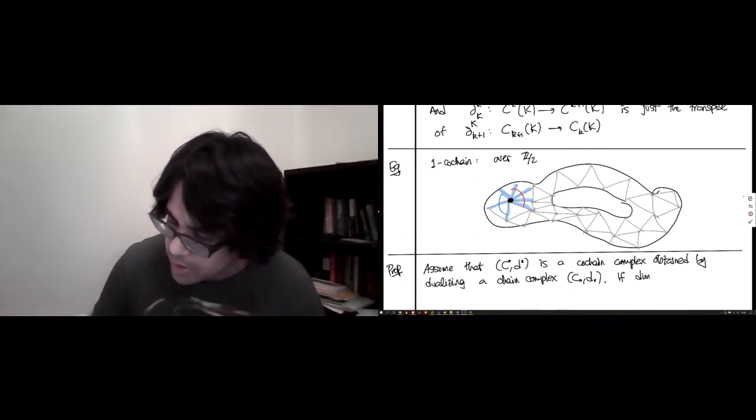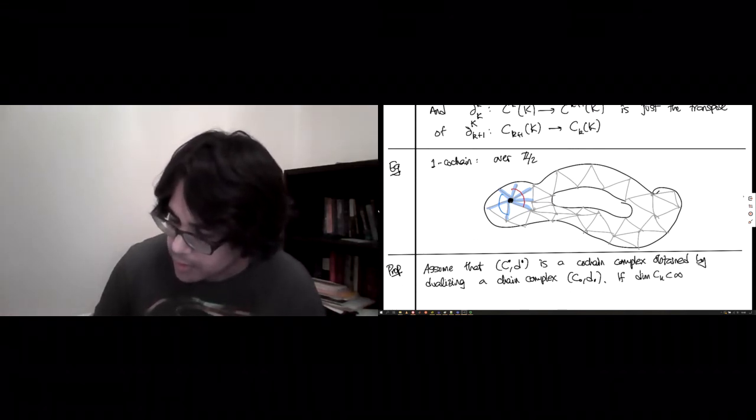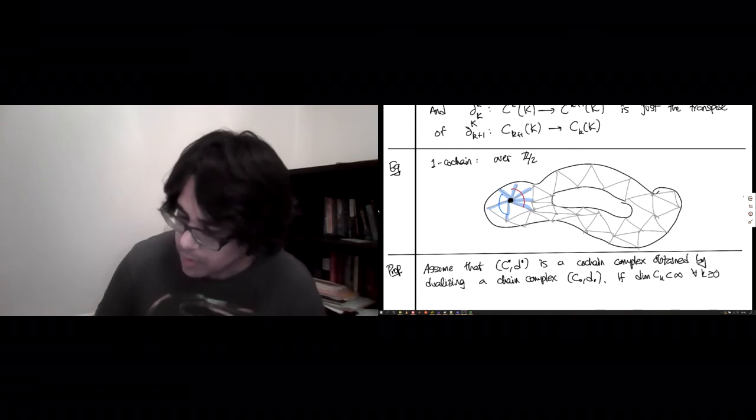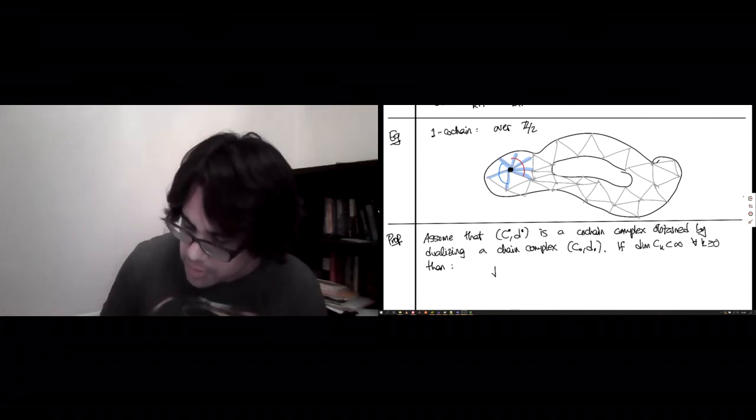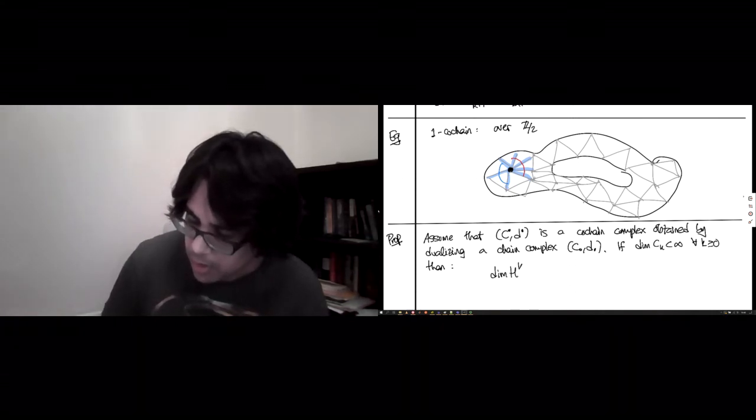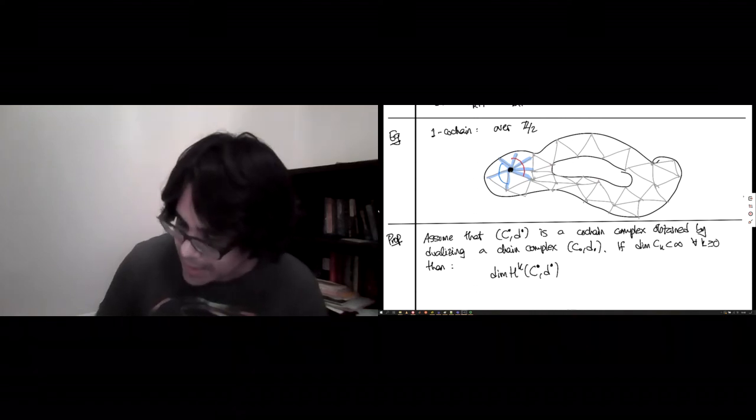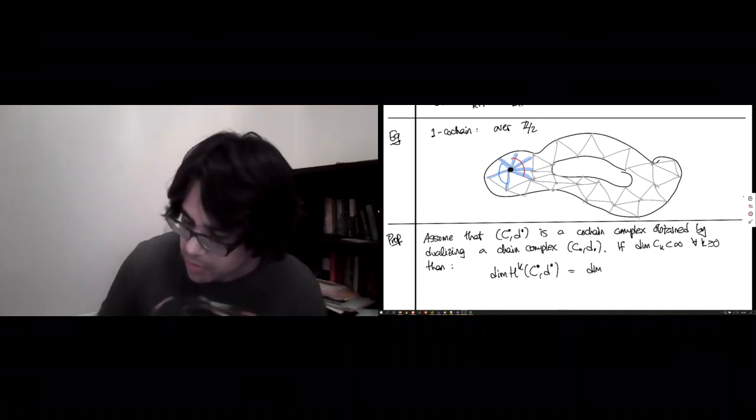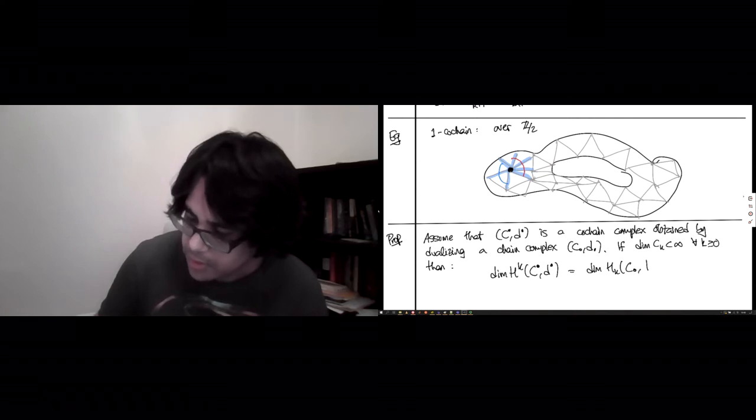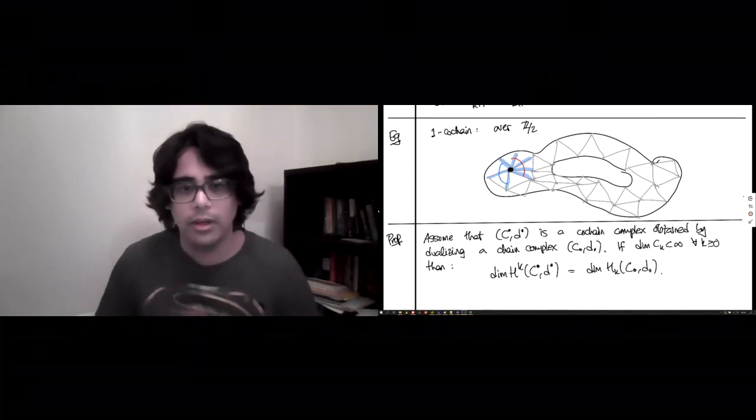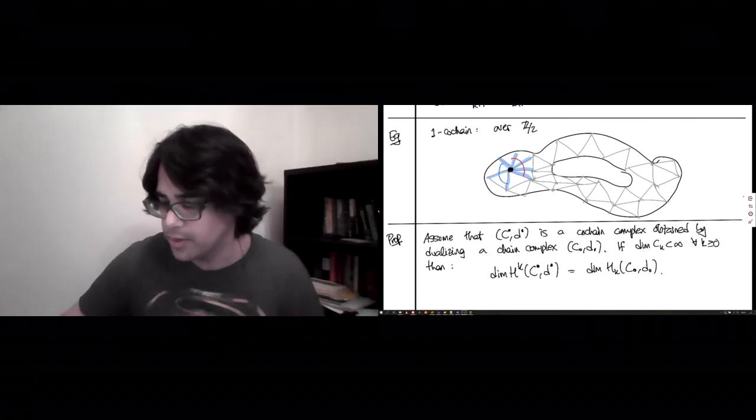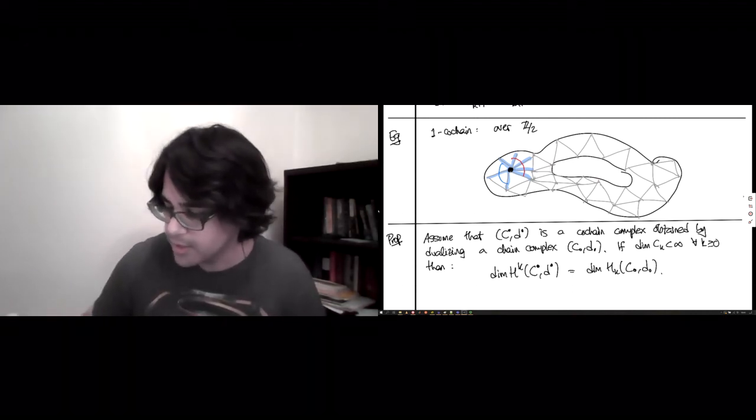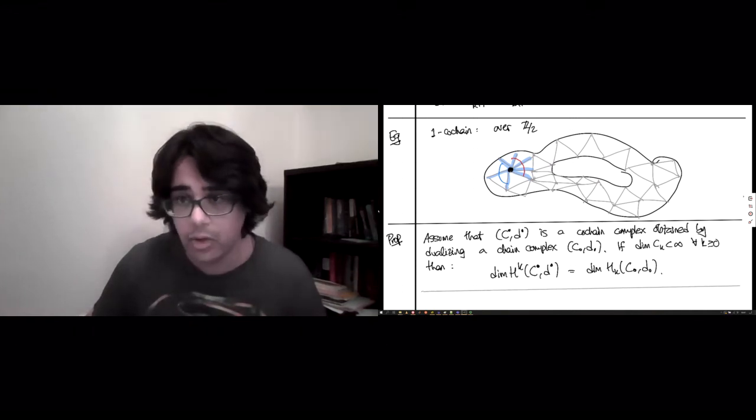If the dimensions of the chain groups are finite for all K, then it turns out that the dimension of the co-homology of this co-chain complex is exactly the same as the dimension of the homology of the associated dual chain complex. So, how should one go about proving this? Let's give this a shot. It's not a bad calculation at all.